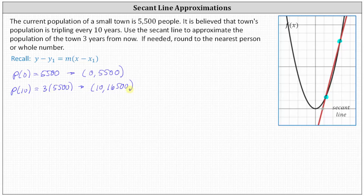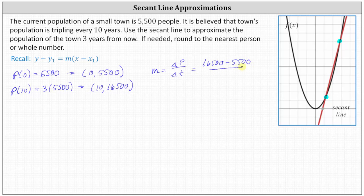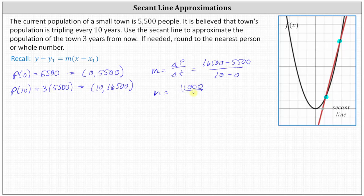And now we need to find the slope passing through these two points. We normally refer to the slope m as the change of y divided by the change of x. In this case though, we have the change in the population P divided by the change in time in years. The change in the population is 16,500 minus 5,500, and the change in time is 10 minus zero. Simplifying, we have the slope m is equal to 11,000 divided by 10, which is 1,100.